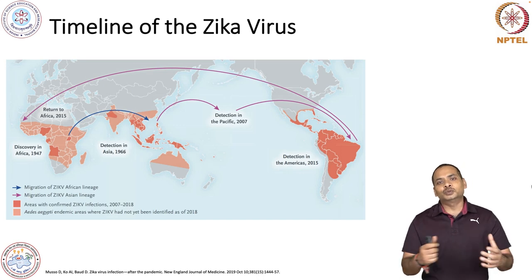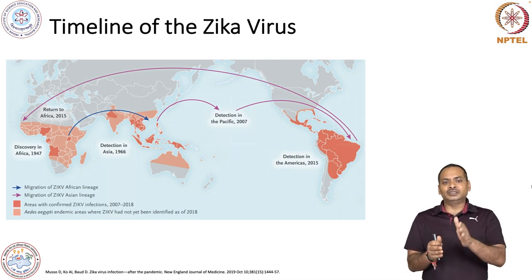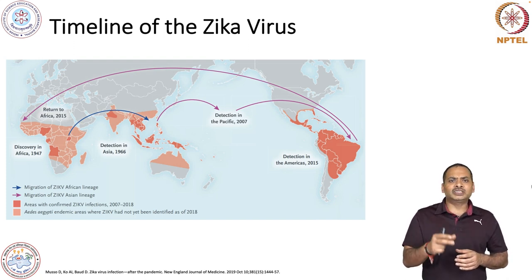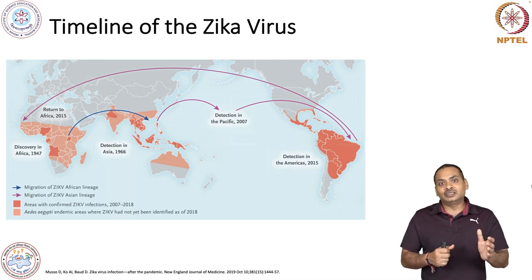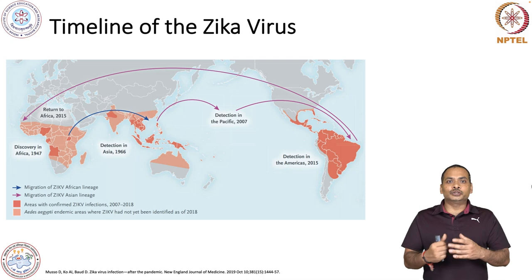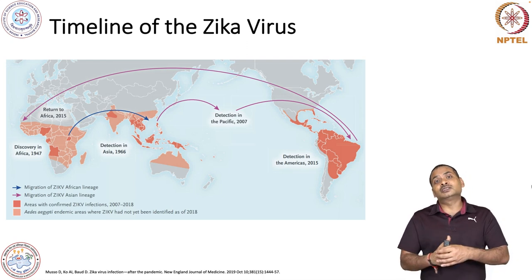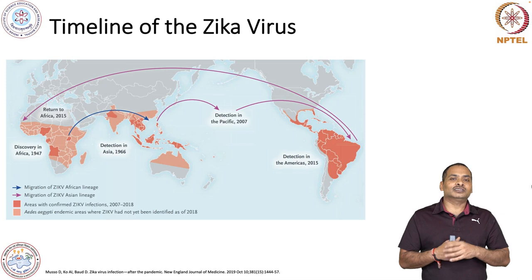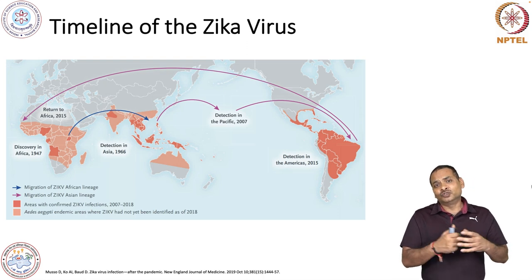Looking at the timeline, from 1947 to 1966 is quite a long duration. But in recent years, from 2007, the movement from the Pacific to the Americas was a much shorter duration. This is because of the ease in human movement due to the large number of flights. The movement of these viruses is also quite fast now. In 2015 it was reported in America, and the same strain was reported in Africa — you can understand the importance of human movement.